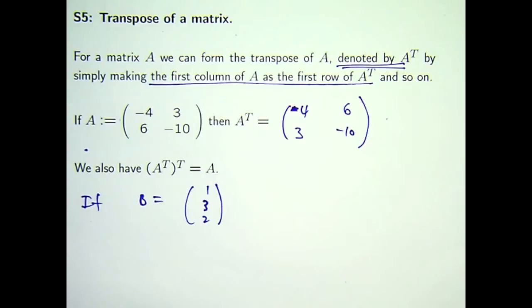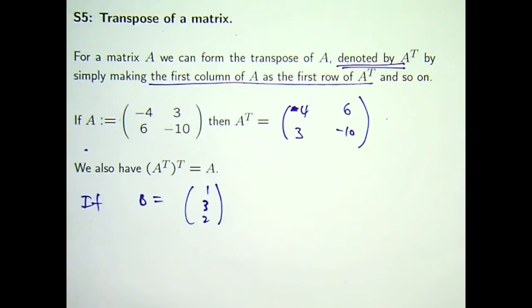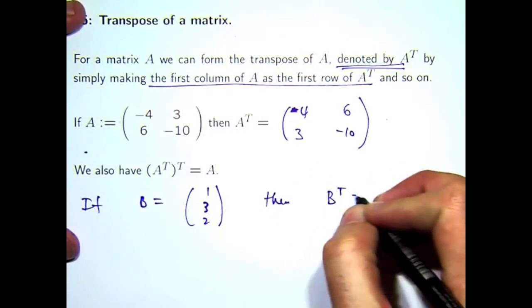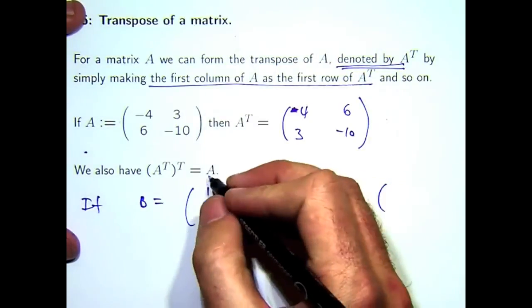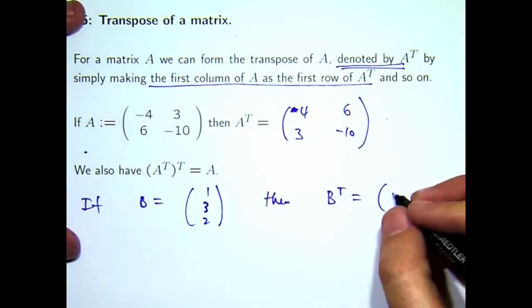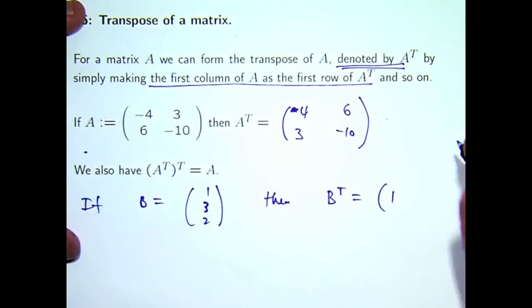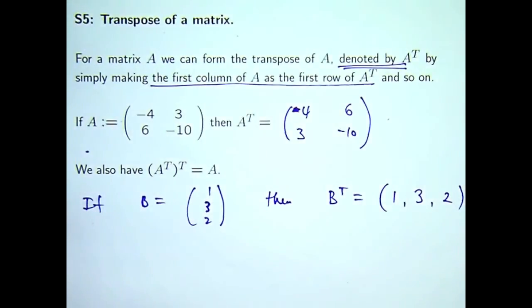The transpose will be a 1 by 3 matrix. So it's got one row, let's make it one column. Sorry, it's got one column, let's make it one row. Okay, now if you want to put little commas in there to separate everything, that's okay too.